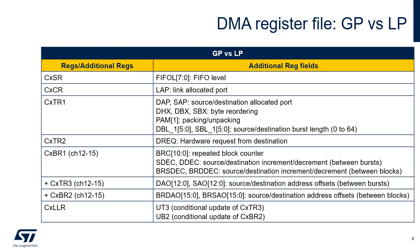Since the LPDMA channels do not include a FIFO, data manipulation such as byte reordering, packing and unpacking operations are not supported. Unlike the GPDMA, the LPDMA does not implement bursts, only block transfers. There is no field to select the hardware request from the destination peripheral in the LPDMA because it only supports requests from the source peripheral. Only the channels 12 to 15 of the GPDMA have the capability of repeating block transfers and adding an assigned offset between consecutive bursts and blocks.